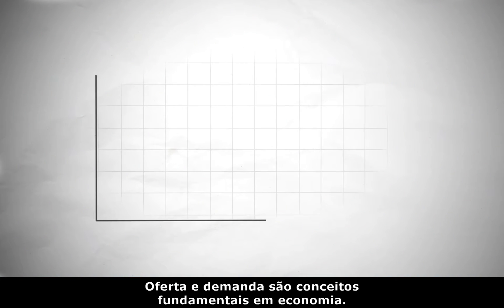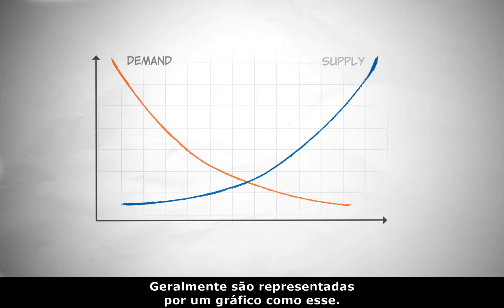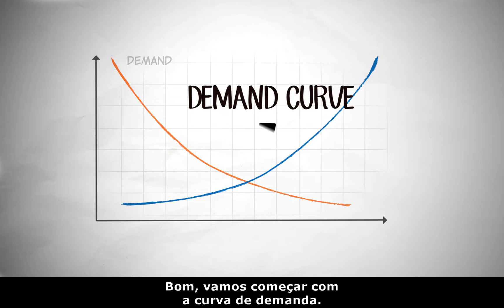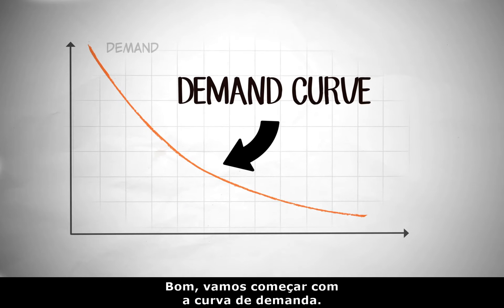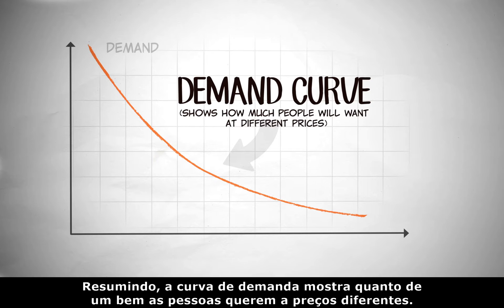Supply and demand are fundamental concepts in economics. Usually, they're represented by a graph like this. So what does this mean? Let's start with the demand curve. In short, a demand curve shows how much of a good people will want at different prices.